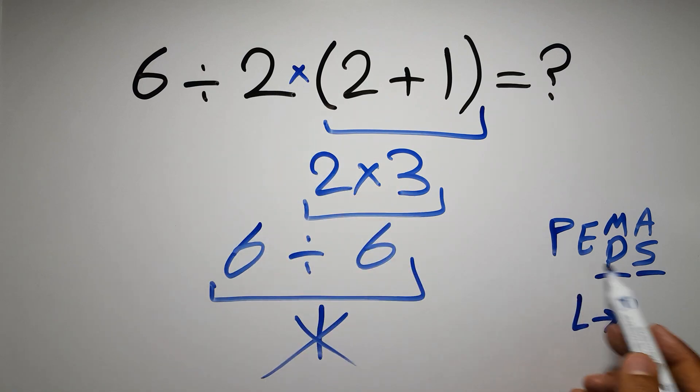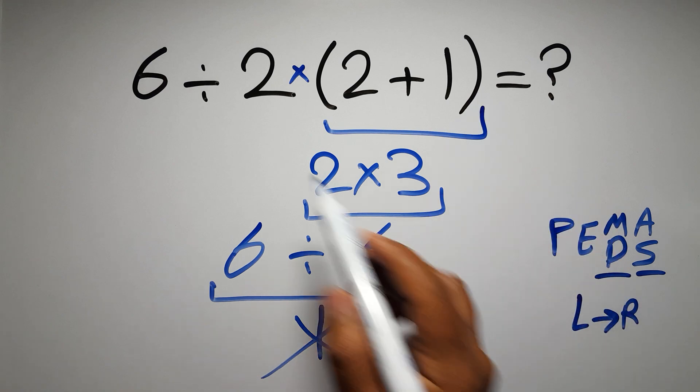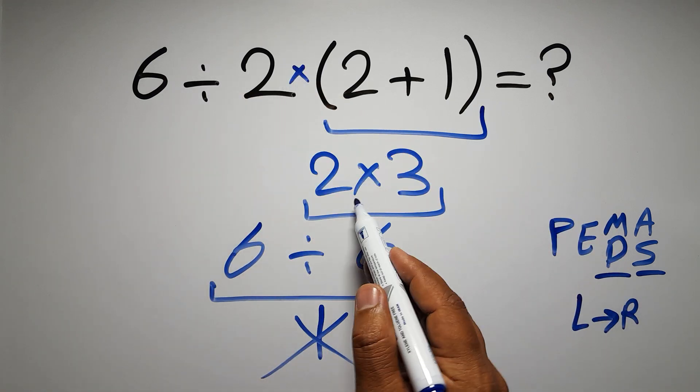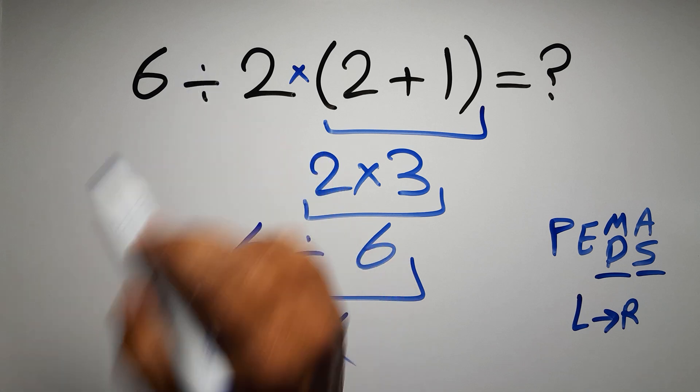So according to the PEMDAS, first we have to do these parentheses, then this division, and finally this multiplication. If we do this multiplication before this division, it is wrong.